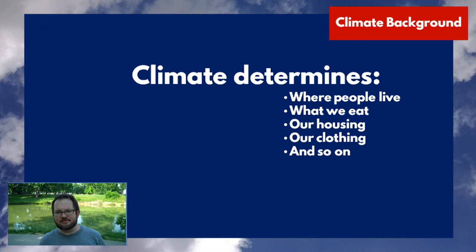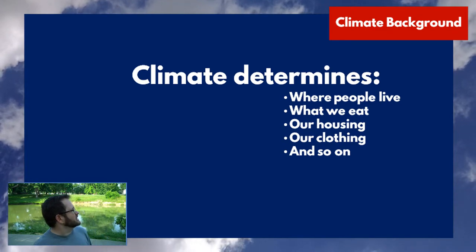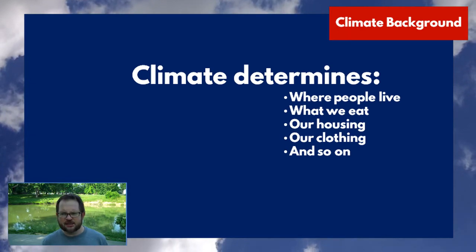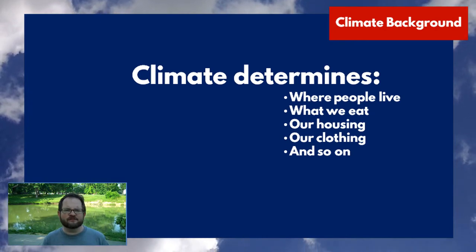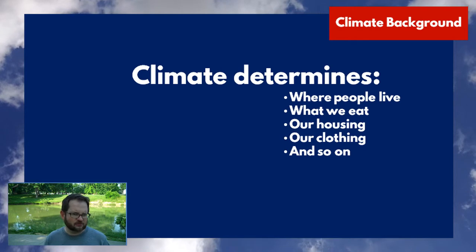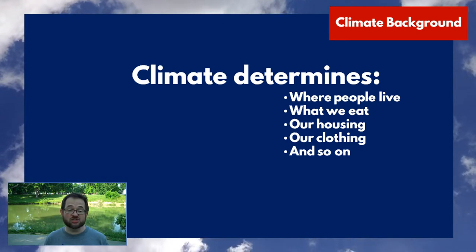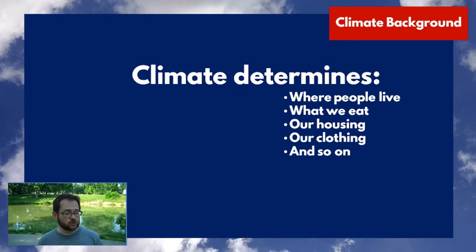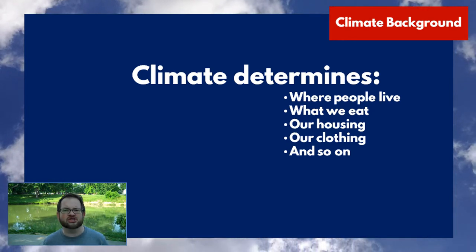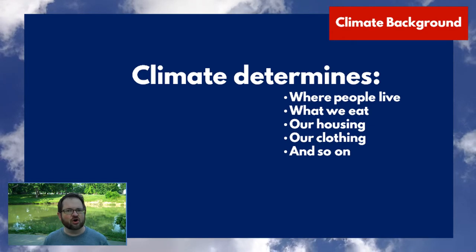Meteorologists don't usually get very excited about climate. Climate is kind of boring to meteorologists — they like to be excited about things like tornadoes and hurricanes. But in many ways, climate is actually more important than meteorology. If an environment is hit by a tornado, relatively soon the environment will recover and the trees will grow back. Climate determines what kinds of plants and animals can live in an area, where people can live, what kinds of foods can be grown, what we eat, what our clothing is, what our housing is, and so much more. In many ways, climate is more important than meteorology, even if things like tornadoes, thunderstorms, hail, and hurricanes get more of the headlines.